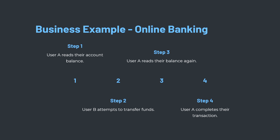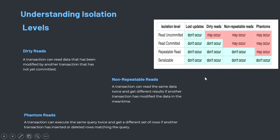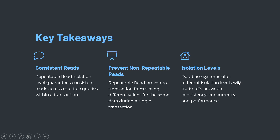In step four, once user A's transaction completes, user B's transaction proceeds, updating the balance to $800. This ensures data integrity and consistency. In terms of isolation levels, serializable does not allow any anomalies, while read uncommitted may have three different levels of anomalies. The key takeaway is that repeatable read ensures consistent reads and prevents non-repeatable reads, which is vital for relevant business transactions.